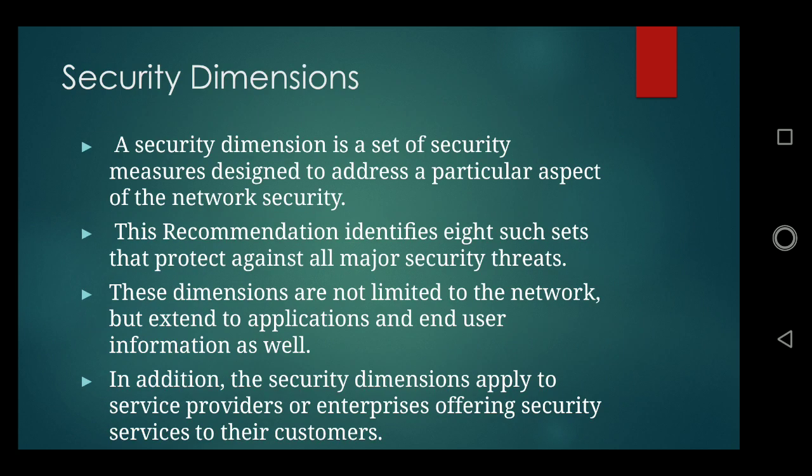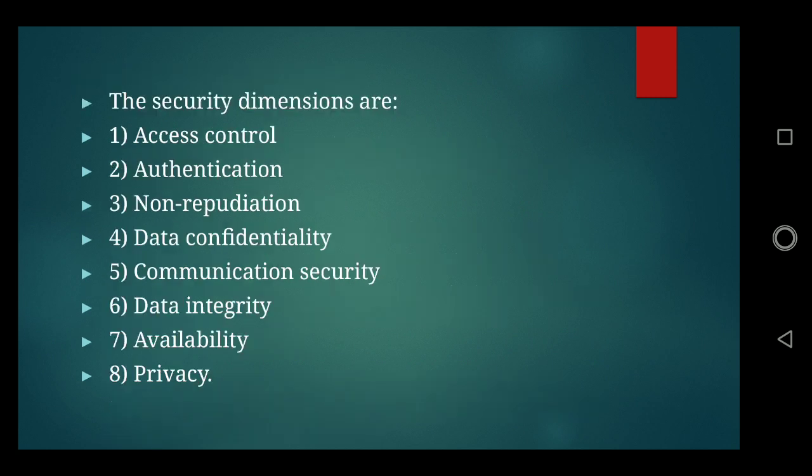Security Dimensions is a set of security measures designed to address a particular aspect of network security. This recommendation identifies eight such sets that protect against all major security threats. The Security Dimensions are also provided by service providers or enterprises offering security services to customers. The eight Security Dimensions are: Access Control, Authentication, Non-Repudiation, Data Confidentiality, Communication Security, Data Integrity, Availability, and Privacy.